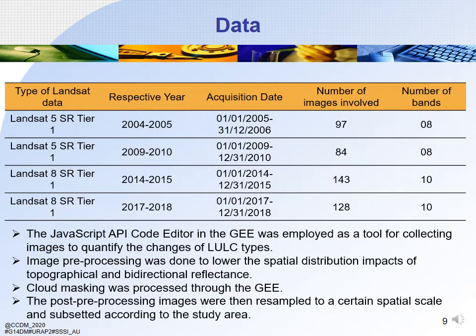In this research, we used Landsat 5 and Landsat 8 data from 2005 to 2018. The area has cloudy weather, which is why we had to collect a large number of images — from 84 to 143 photos. The JavaScript API code editor in Google Earth Engine was employed as a tool for collecting images and quantifying the changes of LULC types. Image preprocessing was done to reduce the spatial distribution impacts of topographical and bidirectional reflectance, and cloud masking was processed through Google Earth Engine. The post-preprocessed images were then resampled to a certain spatial scale and subsetted to the study area.